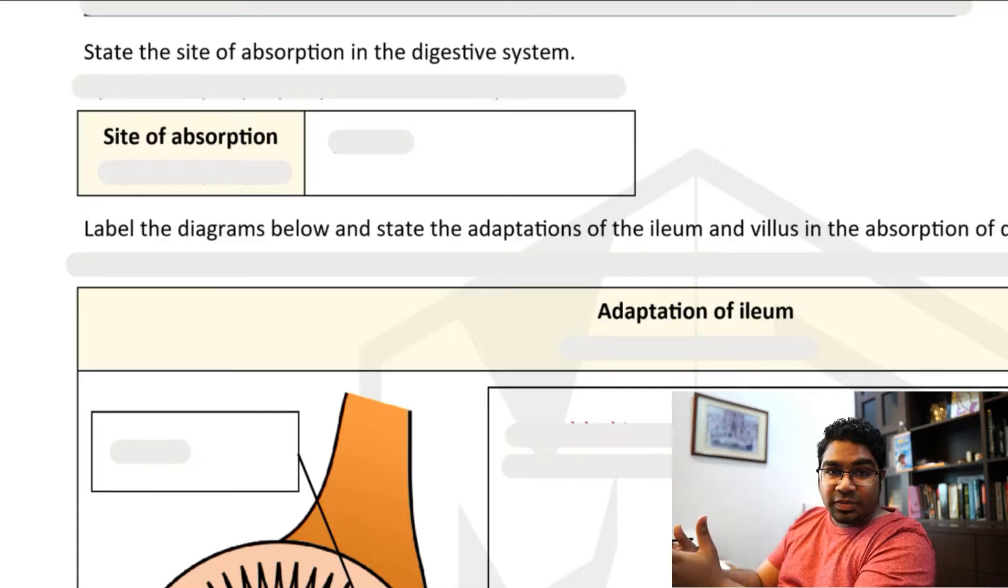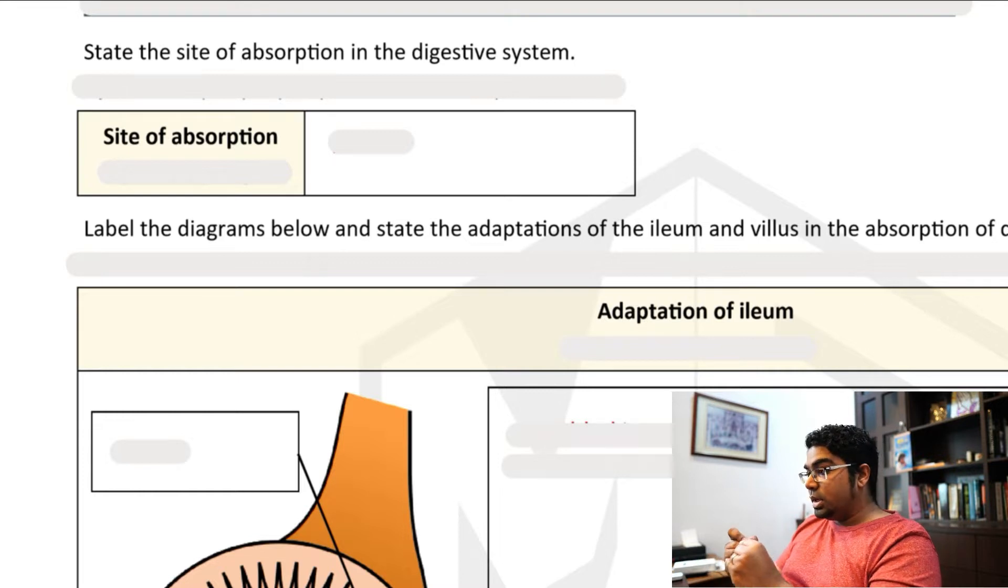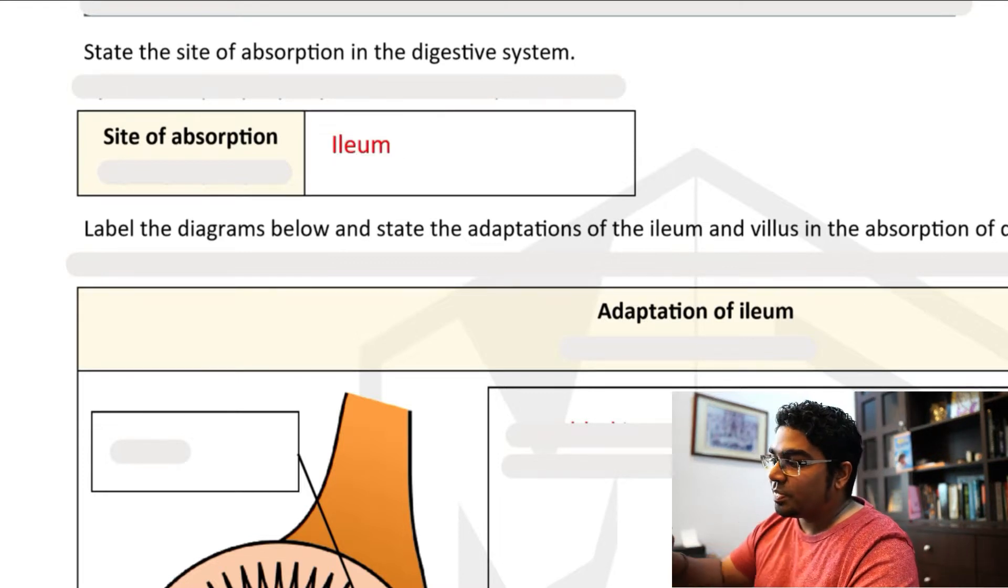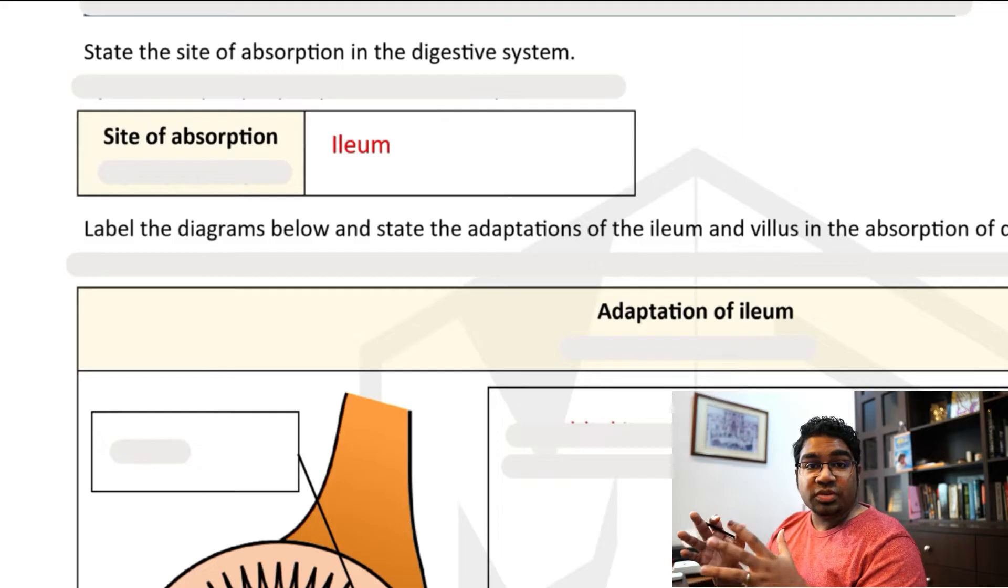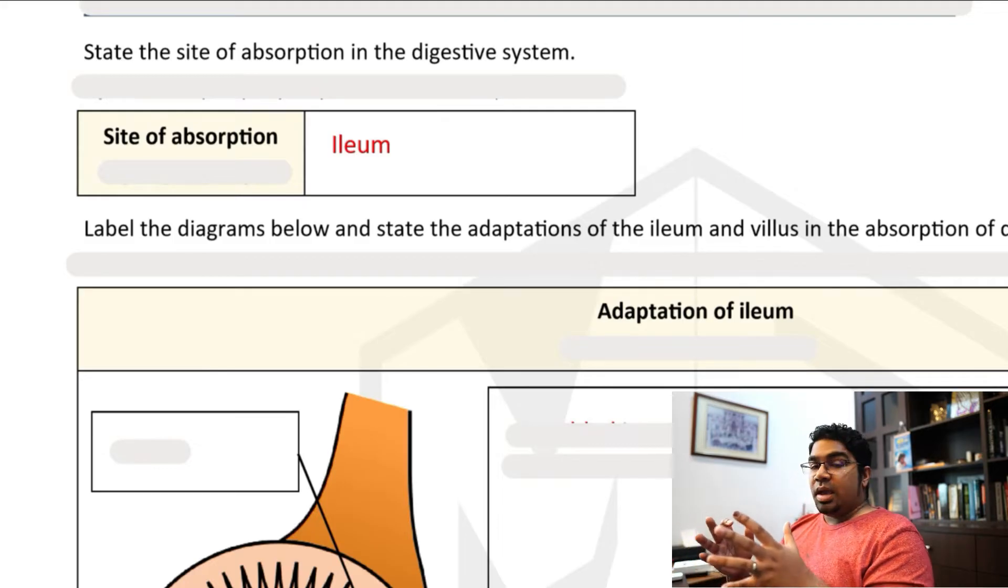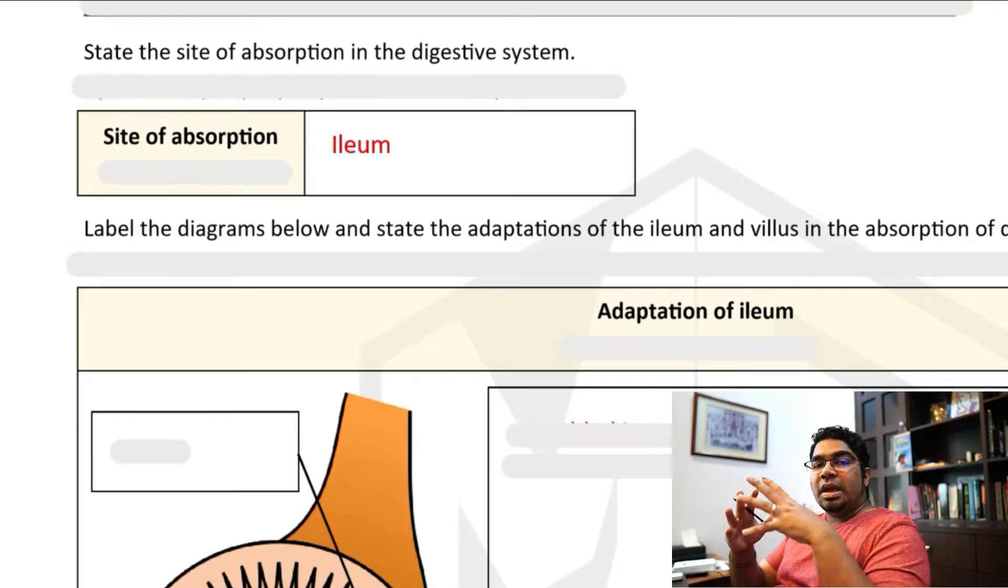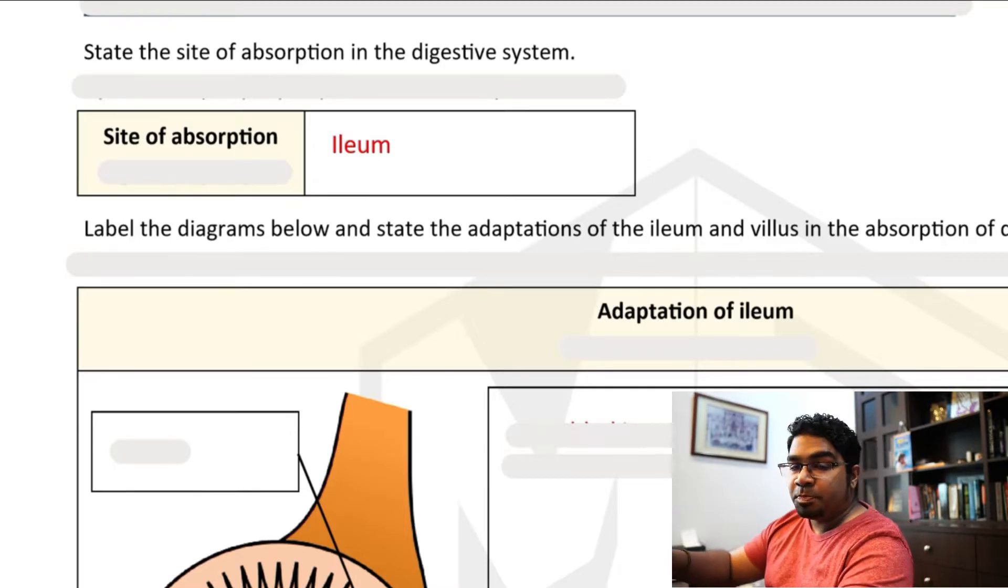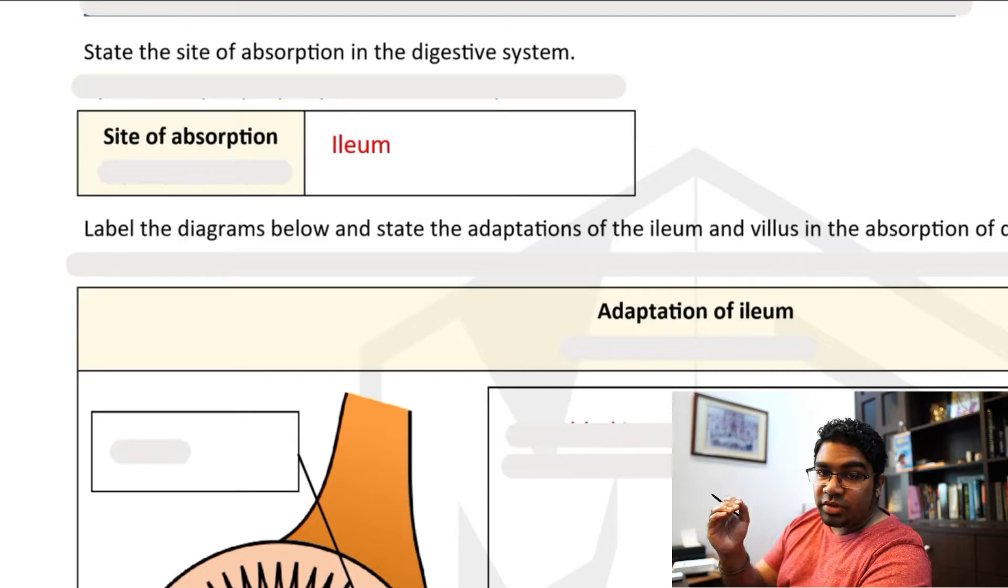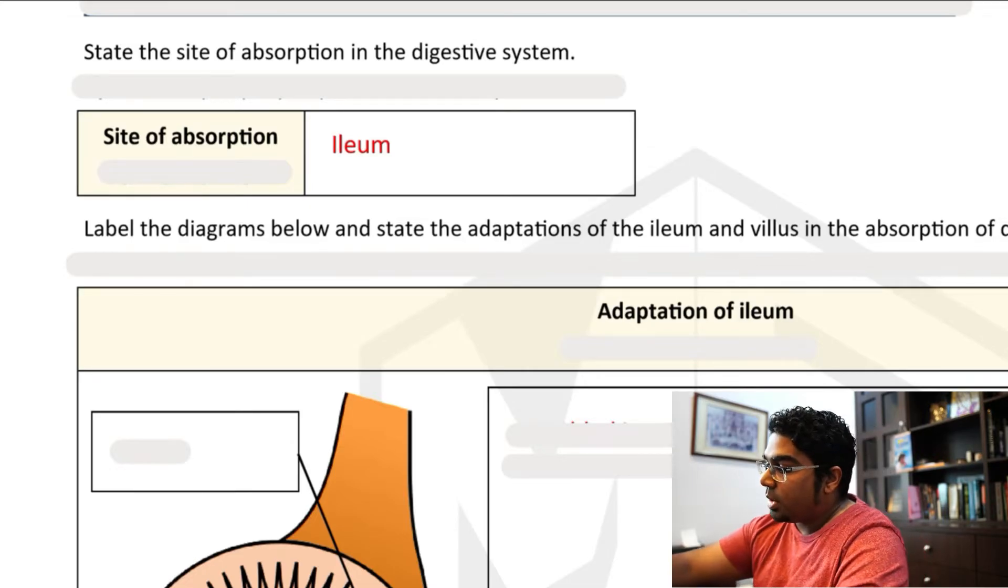Now we're going to look at the site of absorption. The site of absorption of food in our body is the ileum. The ileum is the final portion of the small intestine. And let's look at the adaptations of the ileum to help it absorb food efficiently. Or rather, at this stage, nutrients. The food has become nutrients that are easy to absorb.